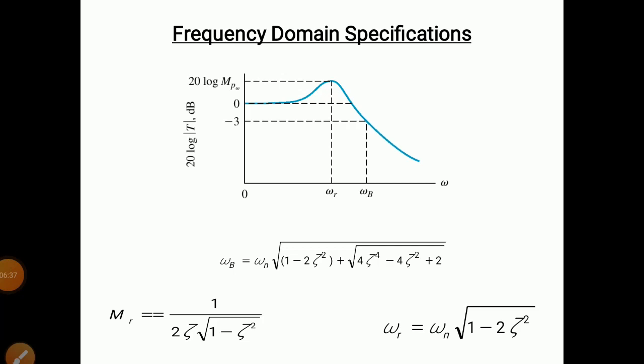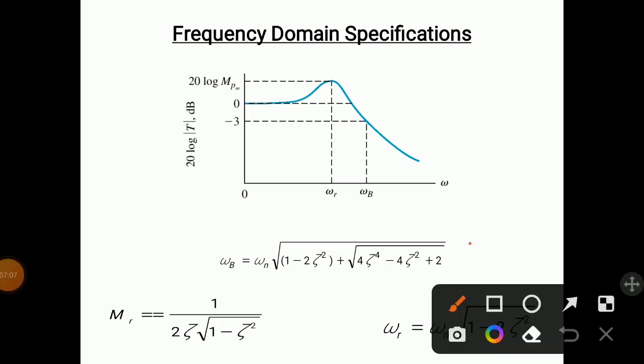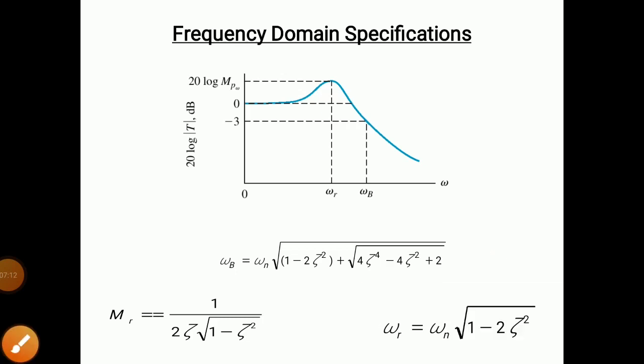The formula for bandwidth frequency is: ωb = ωn · √(1 − 2ζ² + √(4ζ⁴ − 4ζ² + 2)). The formula for the resonant peak (maximum peak) is: Mr = 1 / (2ζ · √(1 − ζ²)). The resonant frequency is given by: ωr = ωn · √(1 − 2ζ²). These are very important formulas related to frequency domain analysis, and using them we can perform analysis of frequency domain specifications.